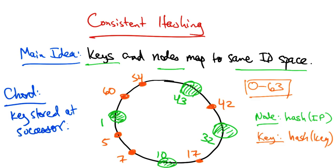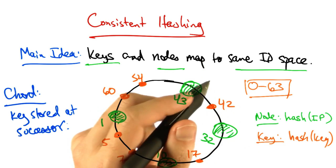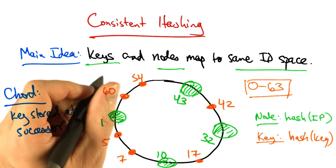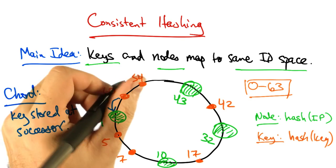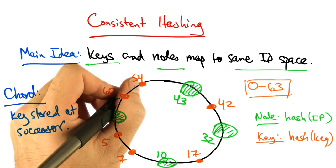The idea in CORD is that a key is stored at its successor, which is the node with the next highest ID. For example, the key with ID 60 would be stored at the node with node ID 1.